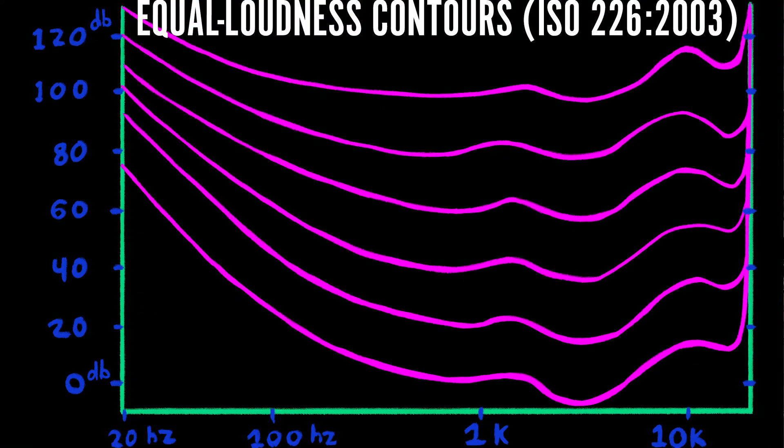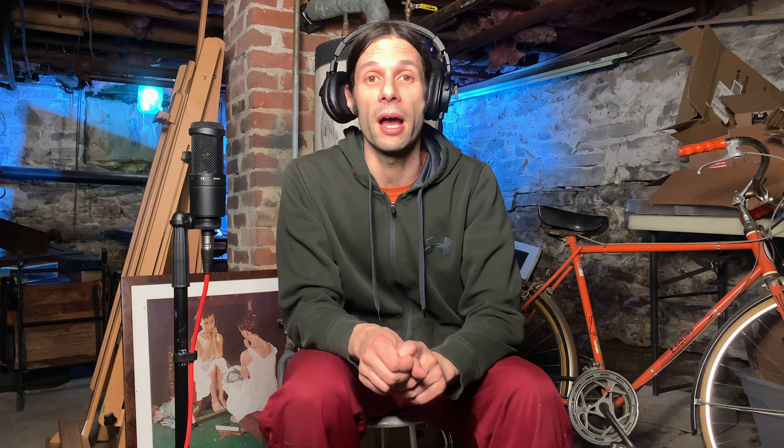There are various standards regarding actual loudness and perceived loudness. The Fletcher-Munson curve and its successors is a popular topic of discussion. Whether or not human brains can fully perceive sub-bass frequencies when they're right up against our ears using headphones is another thing.